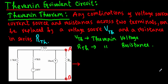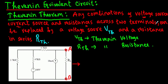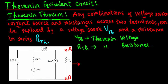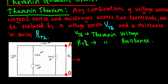Thevenin theorem states that any combination of voltage sources, current sources and resistances across two terminals can be replaced with a voltage source VTH and a resistance RTH in series. VTH is the Thevenin voltage and RTH is known as Thevenin resistance.